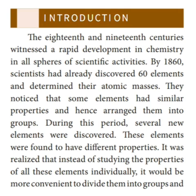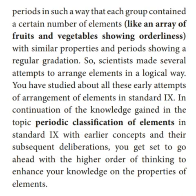Scientists observed that some elements had similar properties and hence they arranged them into groups. At this period, several new elements were discovered with different properties. It was realized that instead of studying the properties of all these elements separately, it would be more convenient to divide them into groups and periods — like an arrangement of fruits and vegetables in an orderly manner.